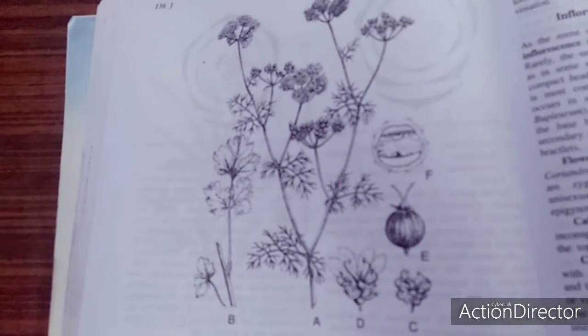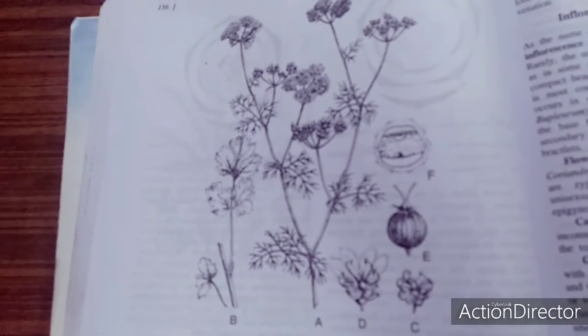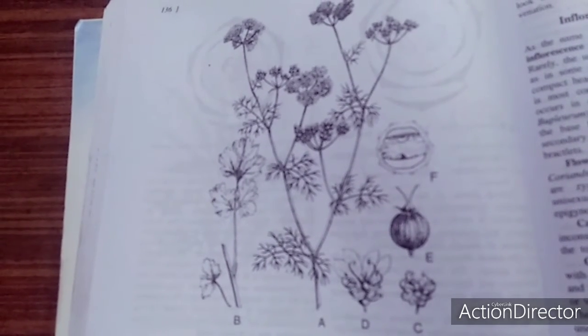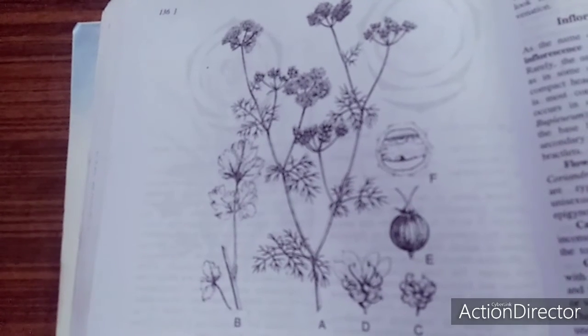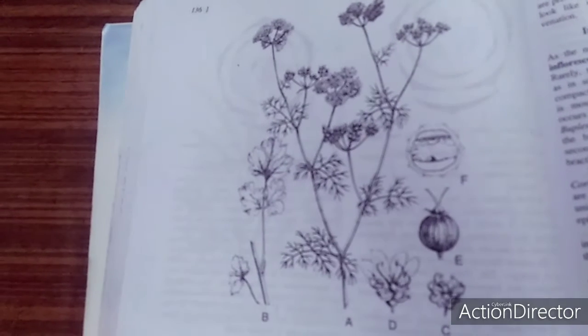Axile placentation is present, where the placenta arises along the central axis of ovary. This is a very characteristic feature of this family.